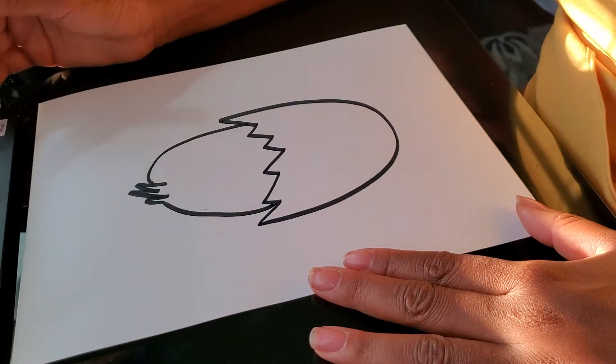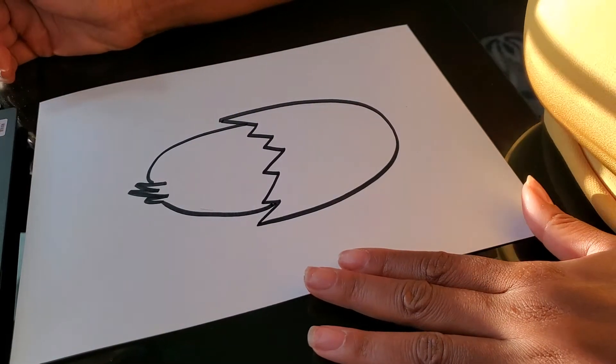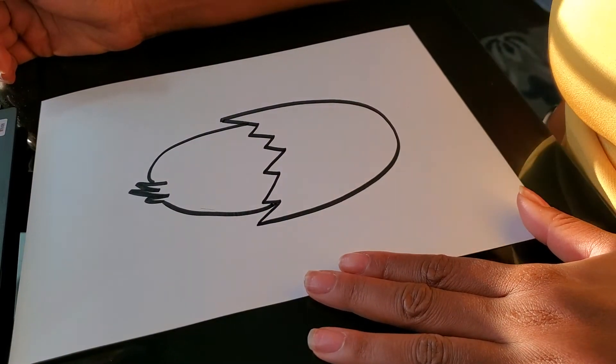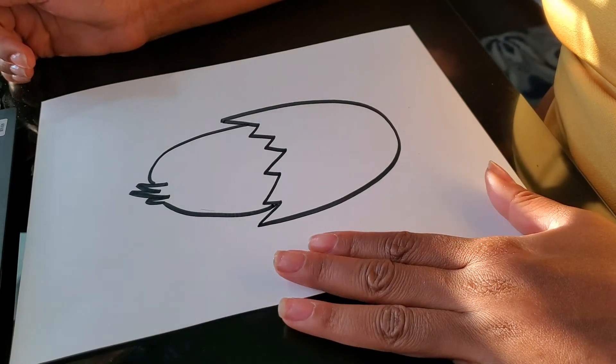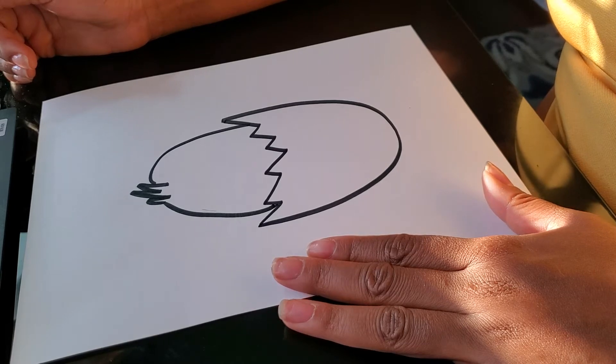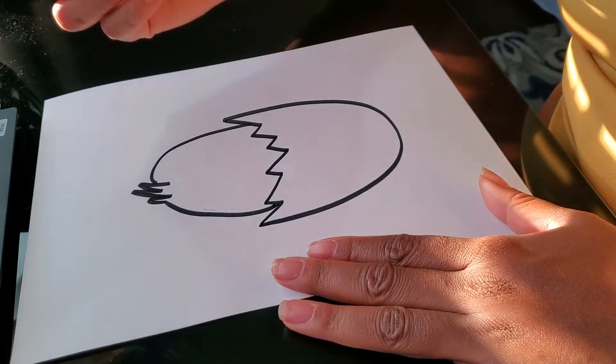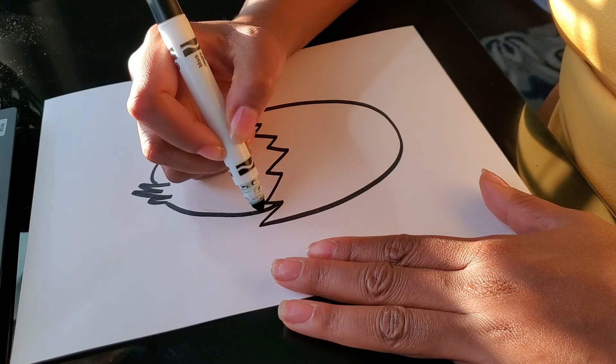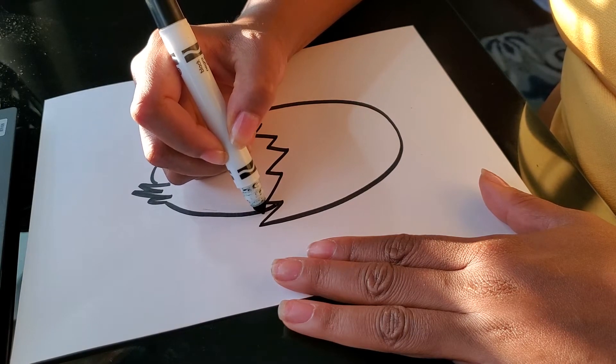Then after that, it's time to draw its face. So, for the baby chicken's face, let's draw, oh, we can also draw some more, some wings around here. I forgot about that.